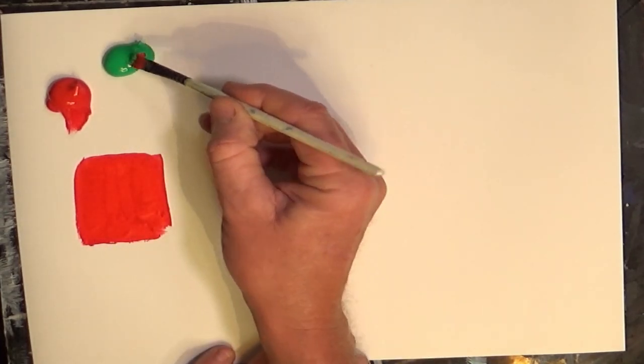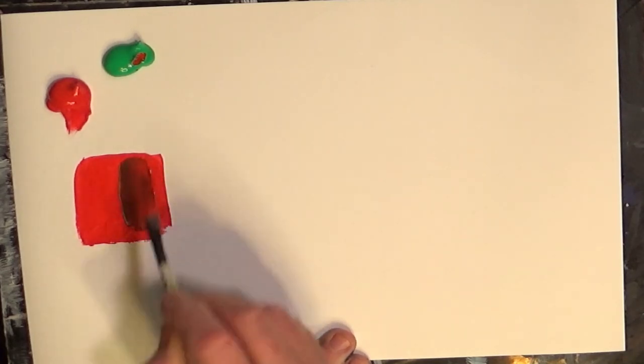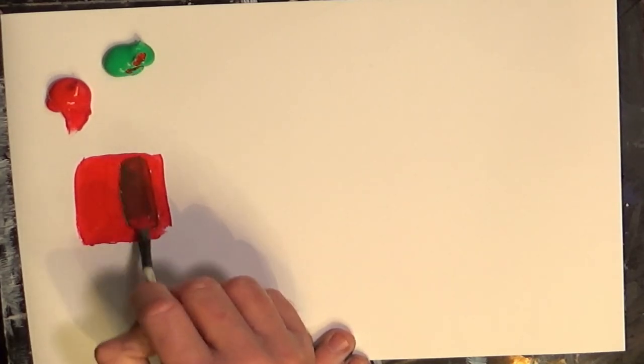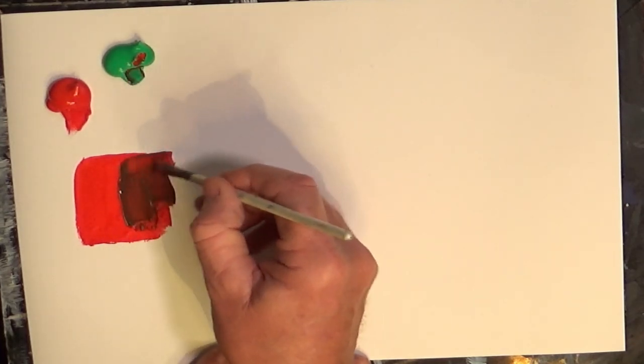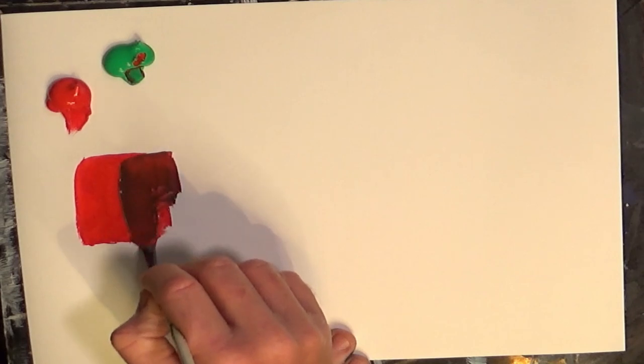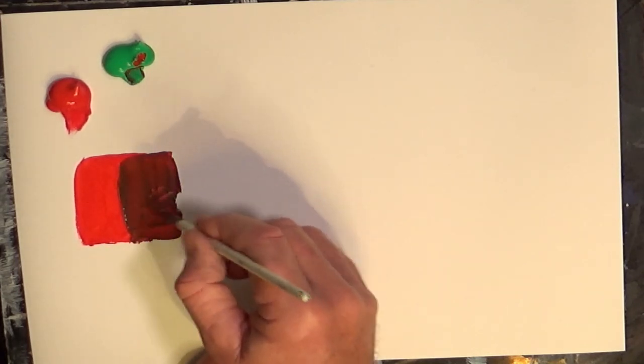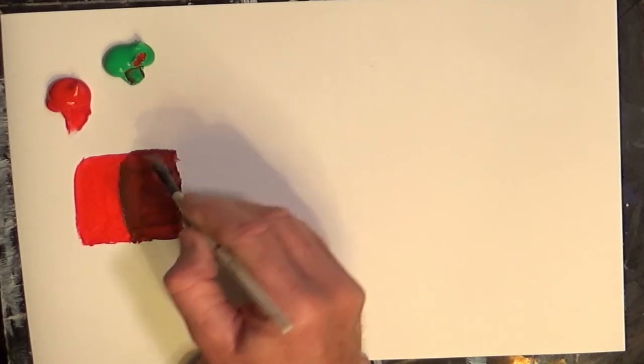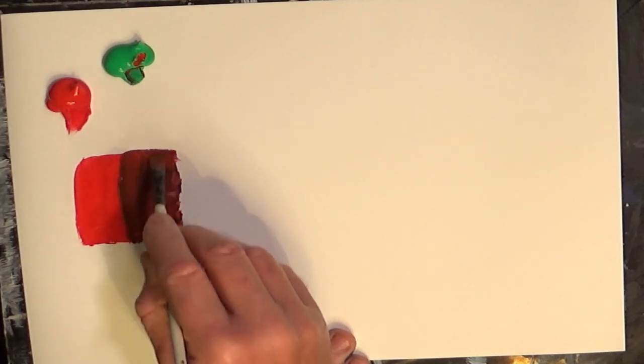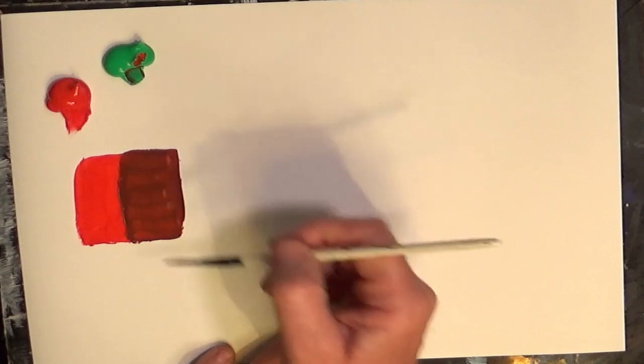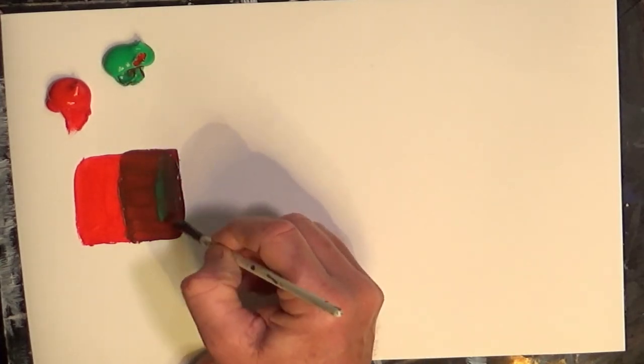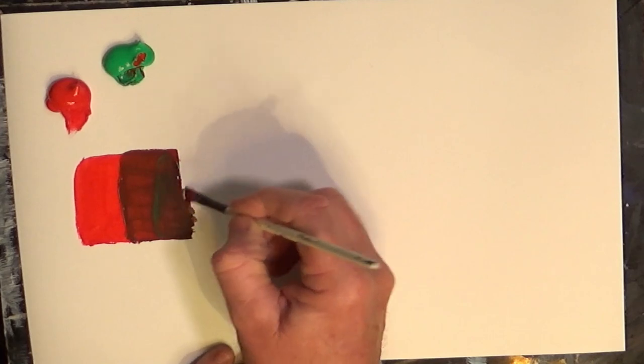So if we add green to that, you can see all of a sudden it's changed the color. So it's gone quite gray, hasn't it? Look at that. So if you want to darken a red rather than using black or burnt umber, add a little bit of green to it. It's amazing when you think about it.